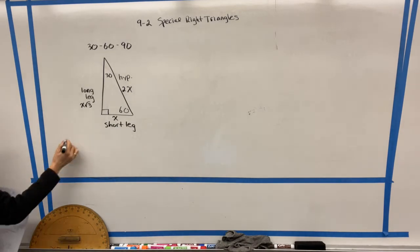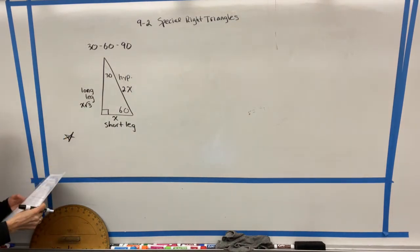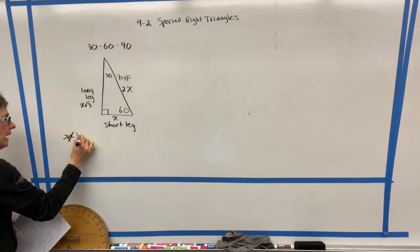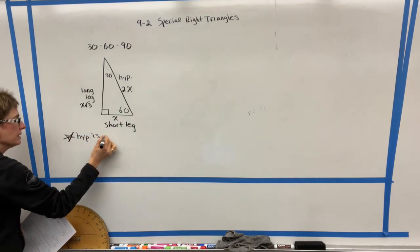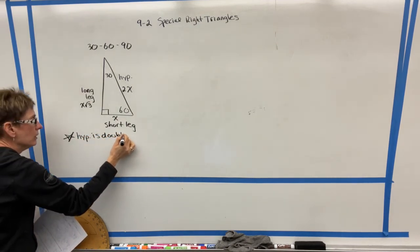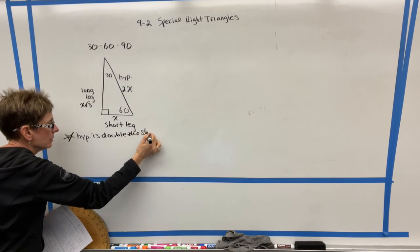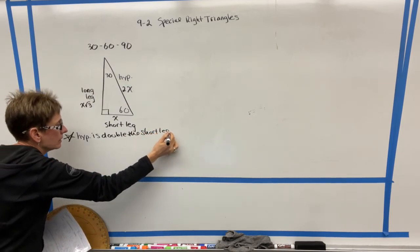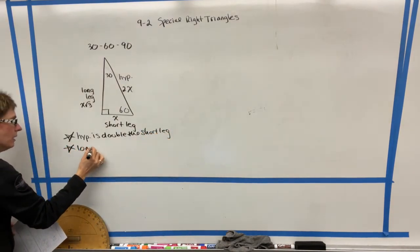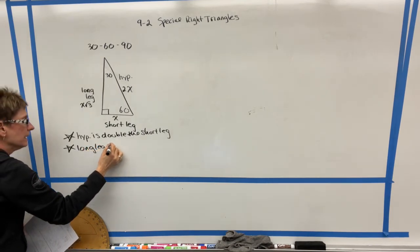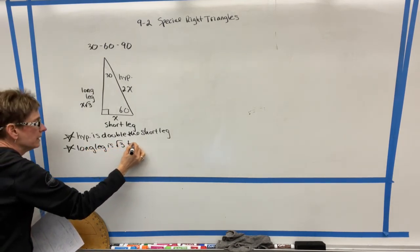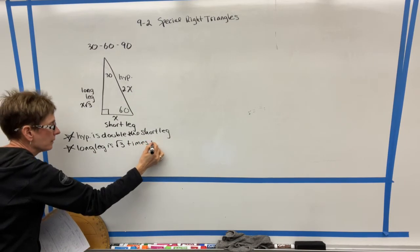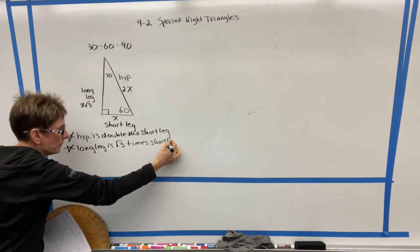So let's write down that information. On a 30-60-90, we know the hypotenuse is double the short leg. And we also know that the long leg is radical three times the short leg.